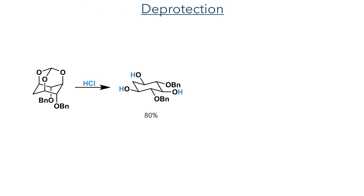With this complete, they could then remove the orthoformate group in an 80% yield using hydrochloric acid. Without this group tethering the oxygens together in the axial conformation, the chair can flip, placing all of the substituents in the more stable equatorial conformation.